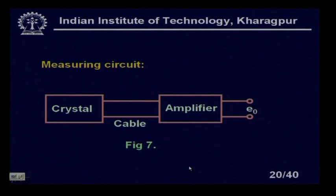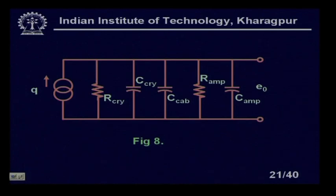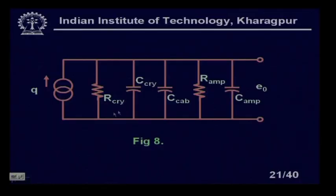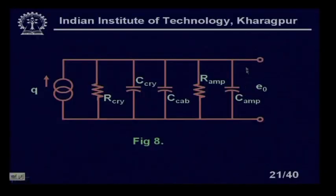In the measuring circuit, the crystal is connected via a cable to an amplifier to get output E₀. The complete equivalent circuit includes the crystal (Q, R_CRY, C_CRY), the cable capacitance C_cable, the amplifier input resistance R_amp, and the amplifier input capacitance C_amp. The total capacitance C = C_CRY + C_cable + C_amp (all in parallel), and total resistance R = R_CRY parallel with R_amp.